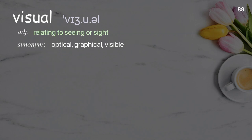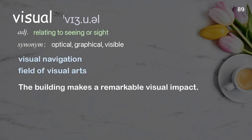Visual. Relating to seeing or sight. Examples: visual navigation, field of visual arts. The building makes a remarkable visual impact.